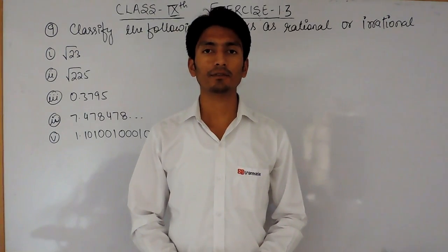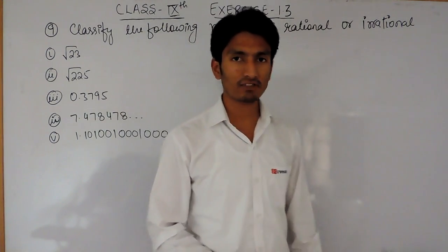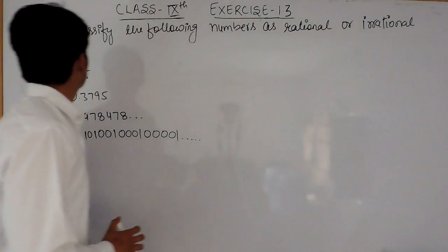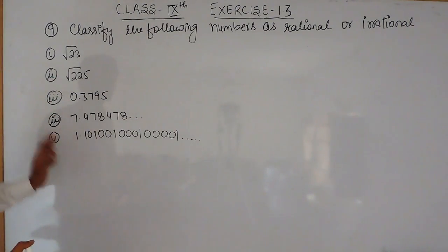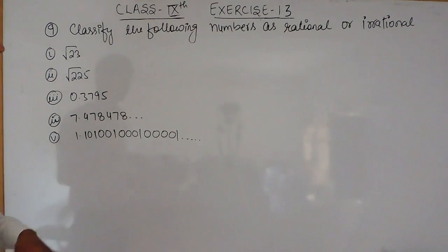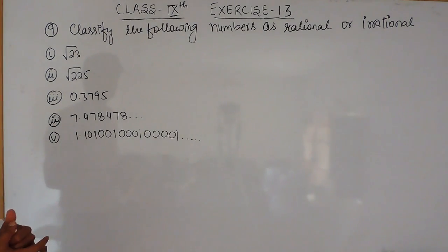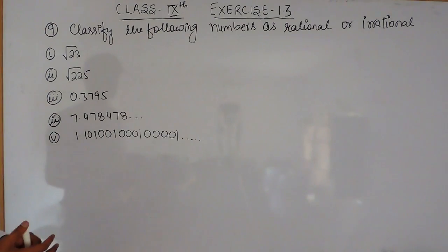Hello everyone, we are from TrueMath and in this video we are going to solve the 9th question of Exercise 1.3. The question says you have to classify the following numbers as rational or irrationals.